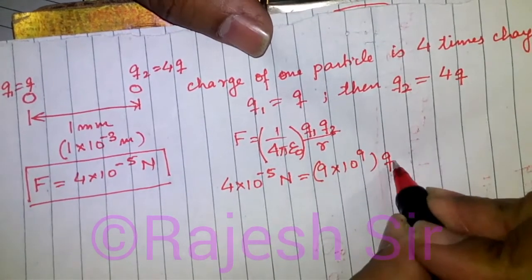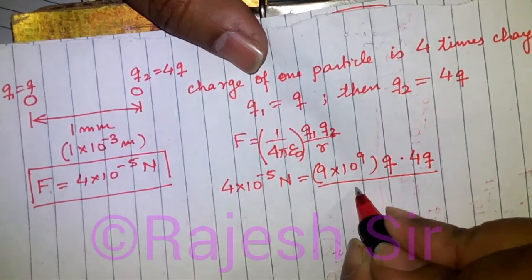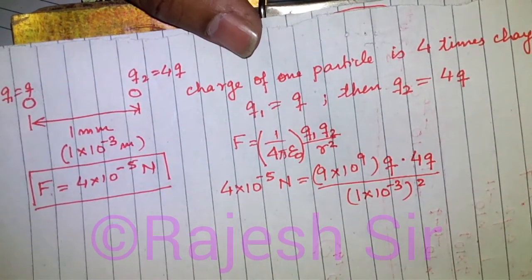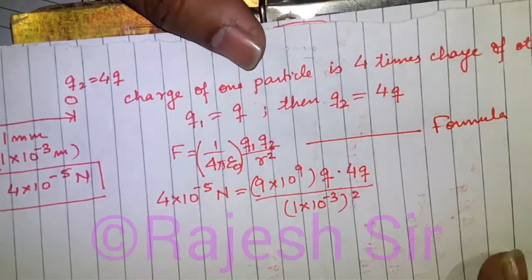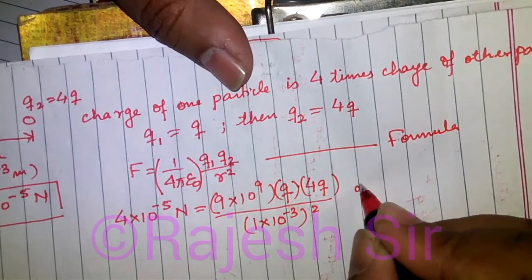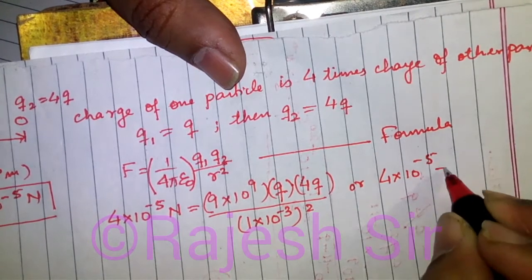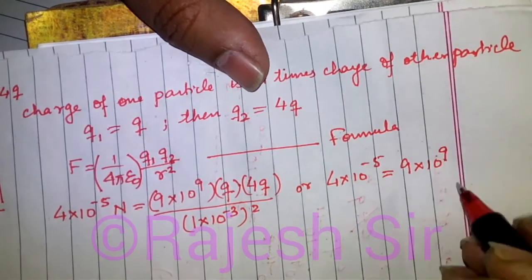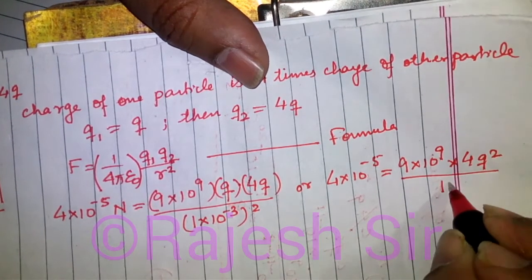Substituting the values: q1 equals q, q2 equals 4q, and the distance r equals 1 into 10 to the power of minus 3 meter. So it becomes 4 into 10 to the power of minus 5 equals 9 into 10 to the power of 9 into 4q squared upon 10 to the power of minus 6.